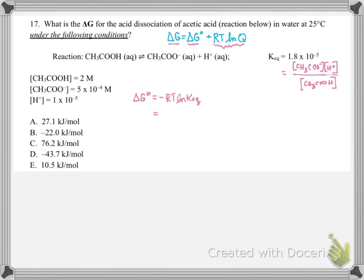Those are both ways to figure out your delta G standard for the reaction. So I'm going to plug in R in kilojoules form, times our temperature. We're at 25 degrees Celsius, so this is going to be 298 Kelvin, times the natural log of our Keq value, which is 1.8 times 10 to the negative 5. Our delta G value will come out in units of kilojoules per mole, and it's 27.15 kilojoules per mole.